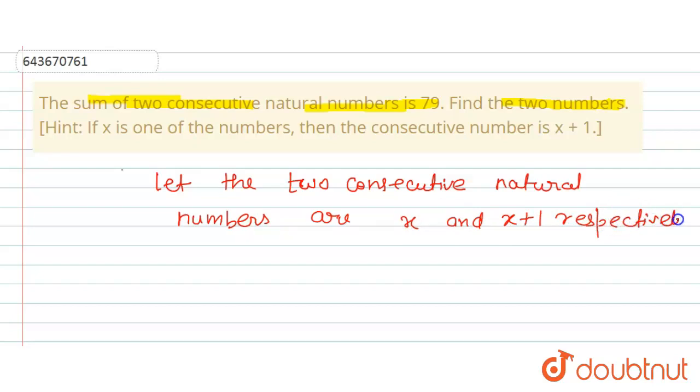Now, according to the question, given as sum of two consecutive numbers, this means sum of x and x plus one. So here x plus x plus one is equal to 79. This is the condition given in the question.